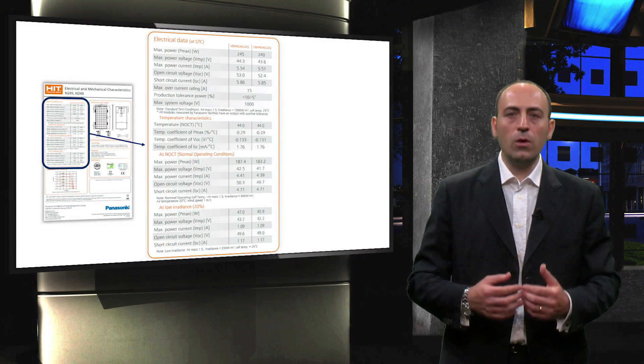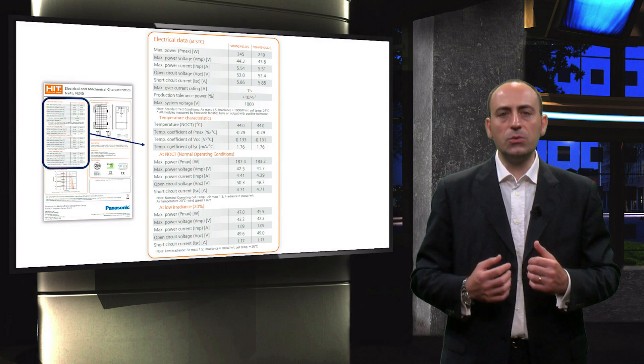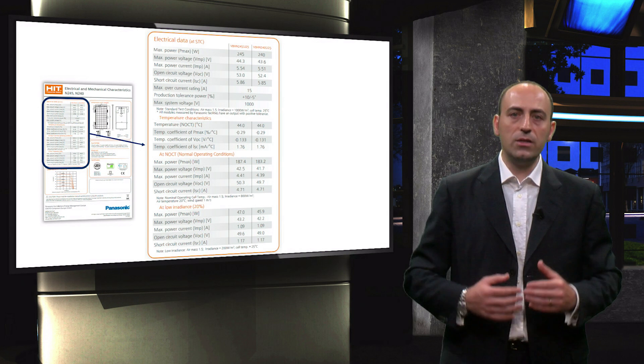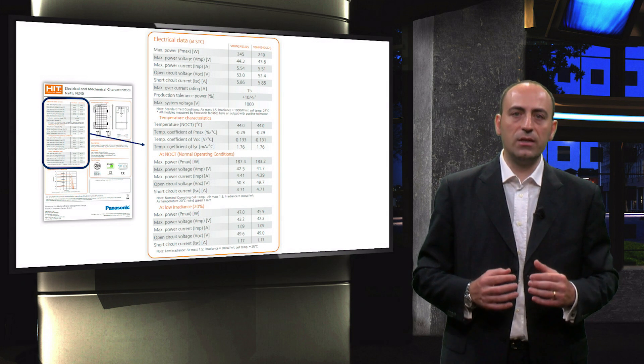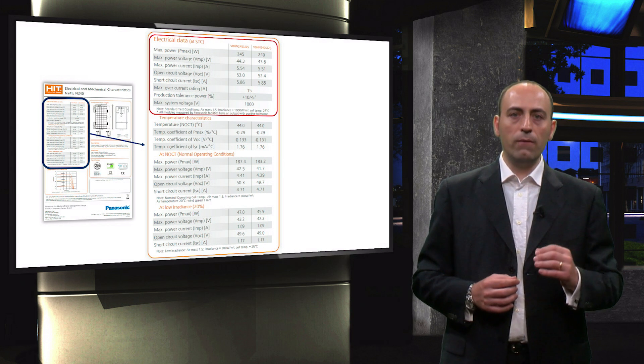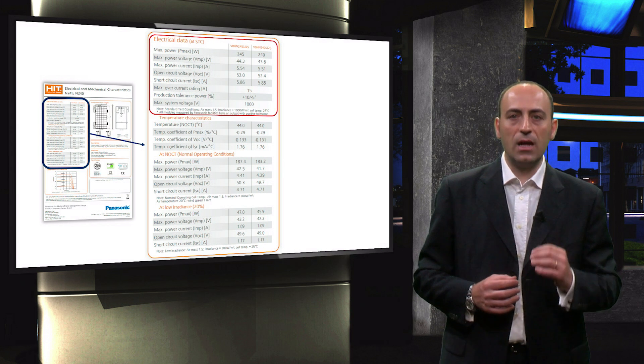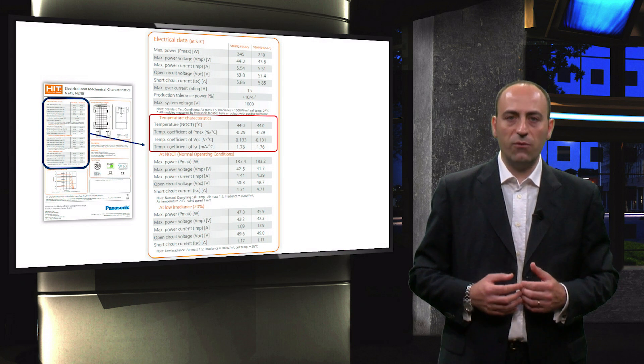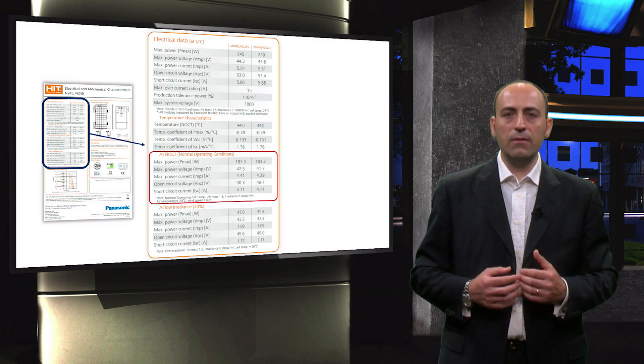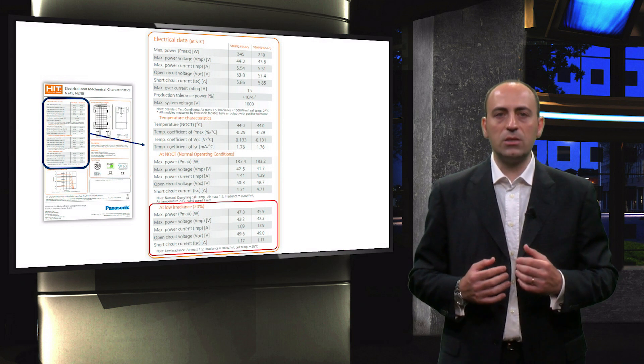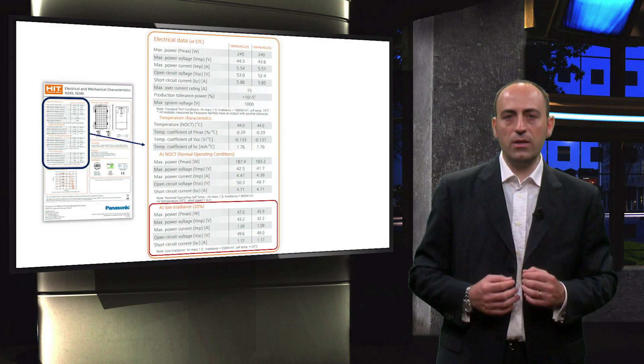Finally, we are going to see the most important and interesting part of the datasheet, where the electrical data are listed. First of all, it is important to notice that these electrical data are subdivided into 4 groups. The table on top gives the results at standard test conditions, or STC. Then the temperature characteristics follow, the third table gives the result of normal operating condition, and finally, the last one is under low irradiance conditions.